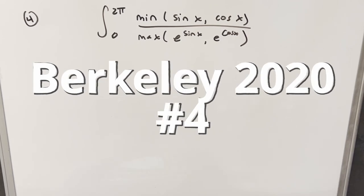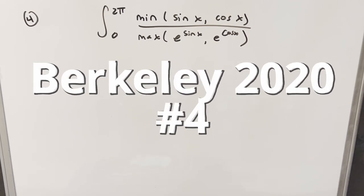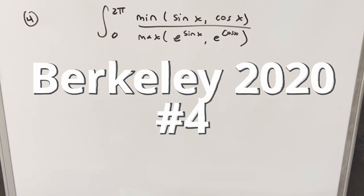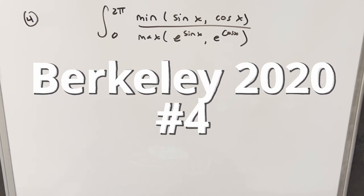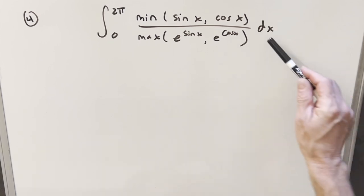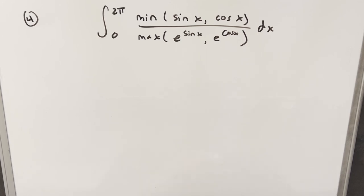Hey, we have here today a really interesting integral from the Berkeley Integration Bee 2020. This was problem number four. We have the integral from zero to two pi of the min of sine x or cosine x over the max function of e to the sine x or e to the cosine x, dx.